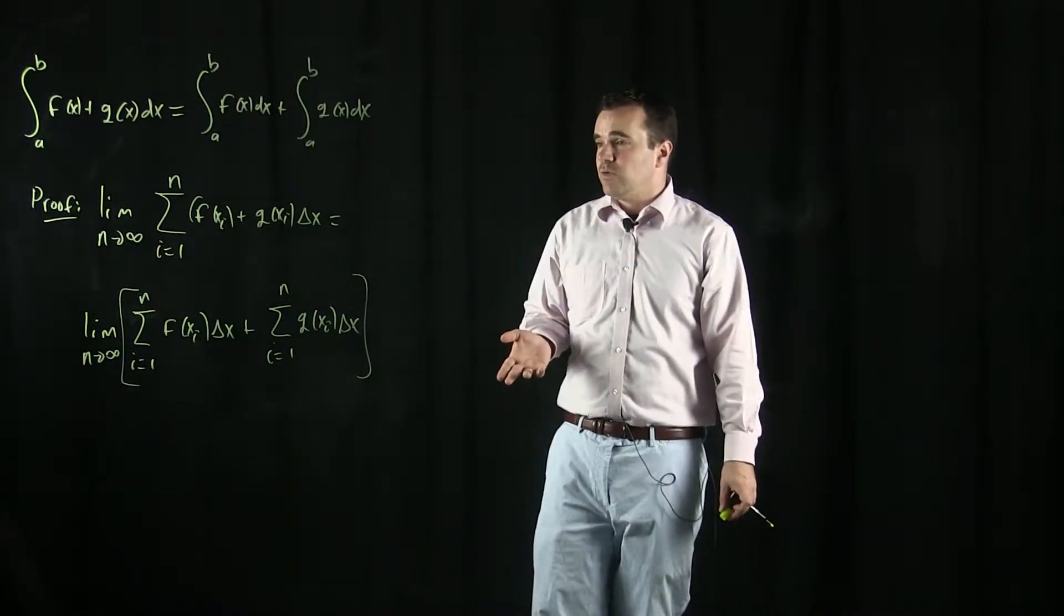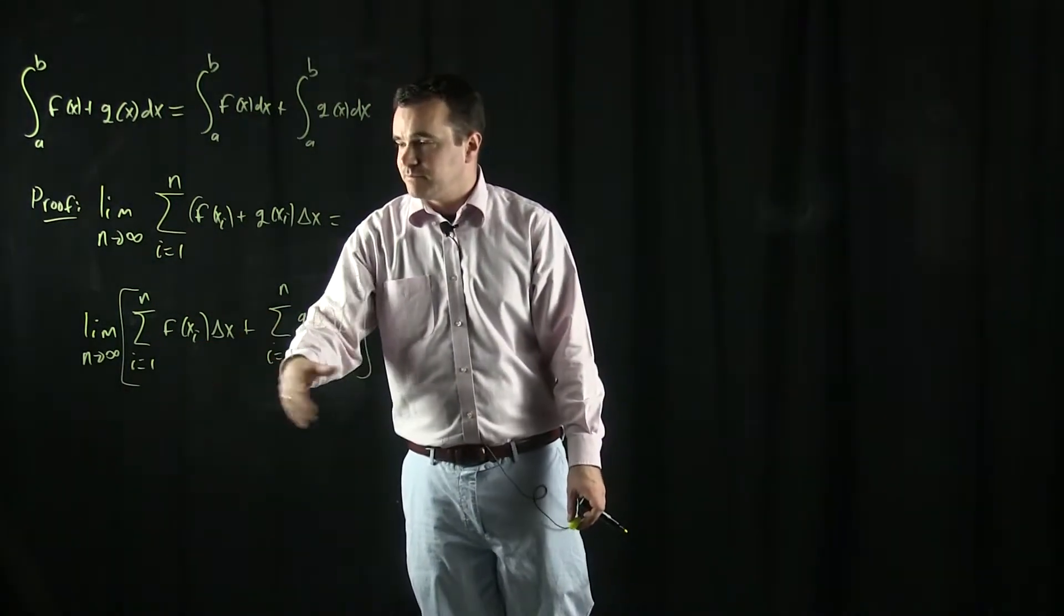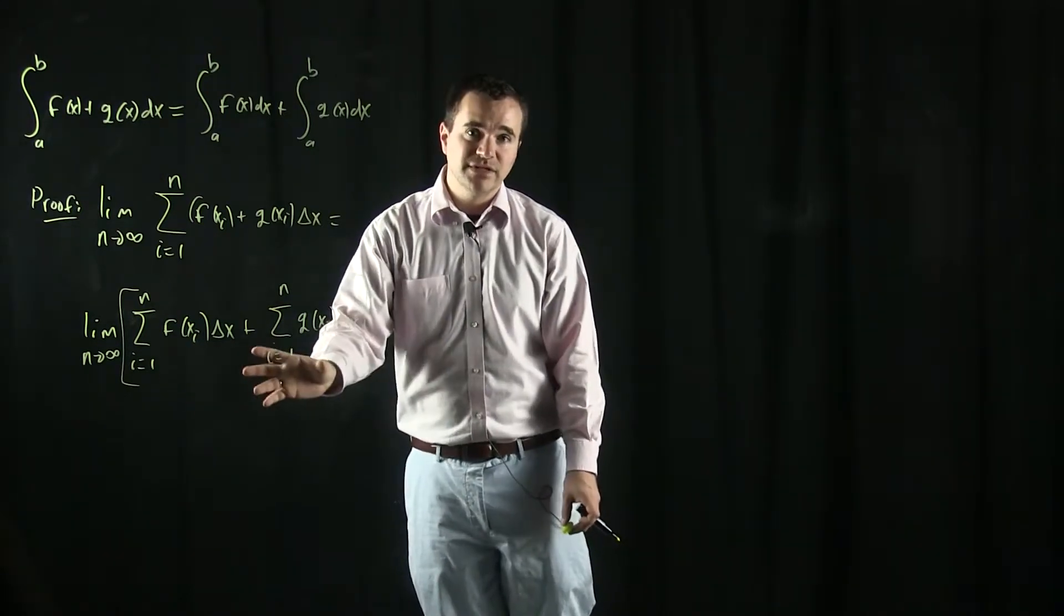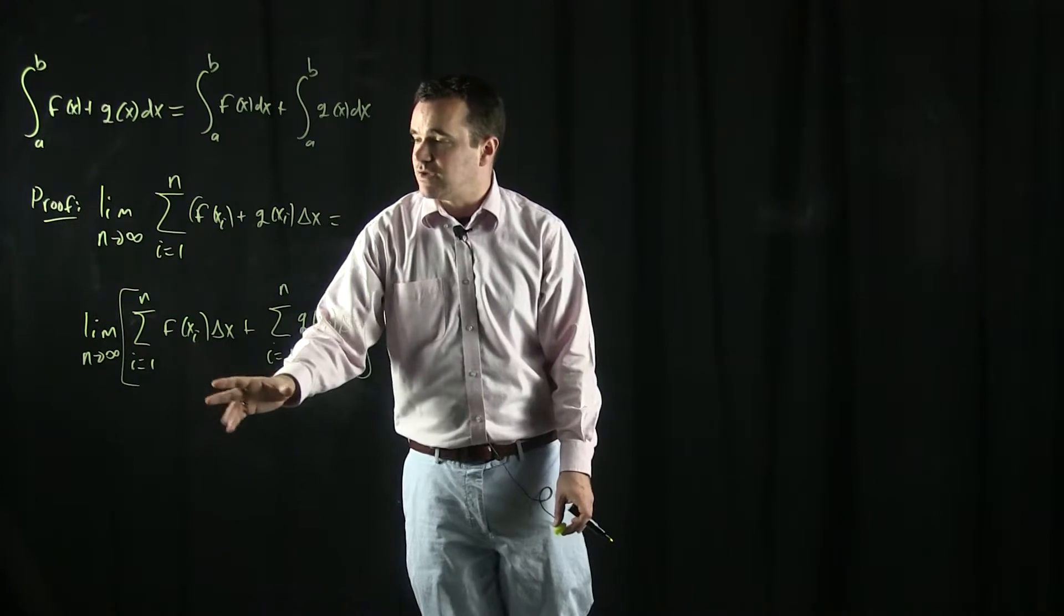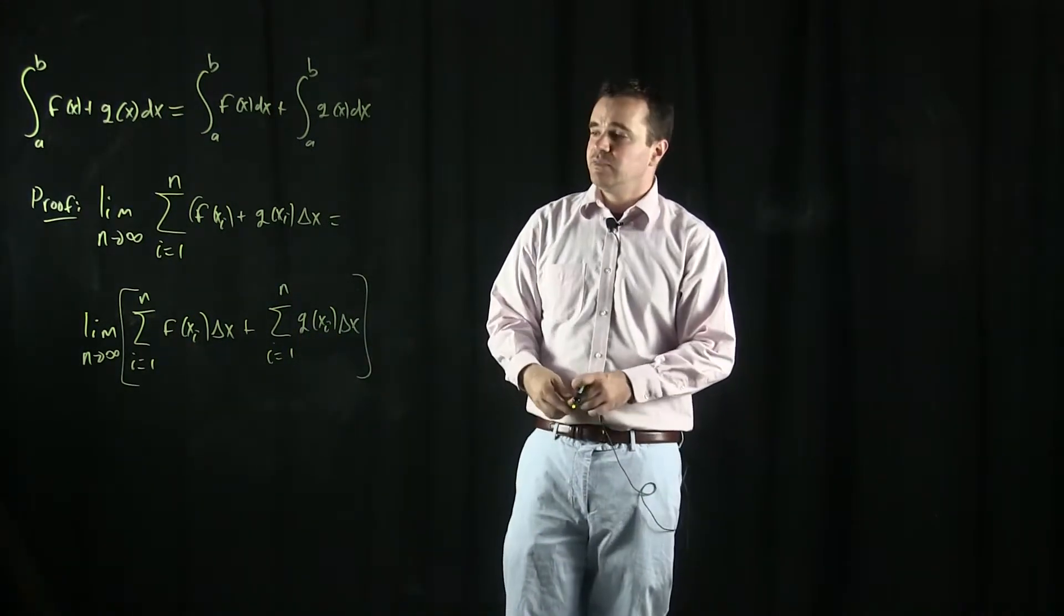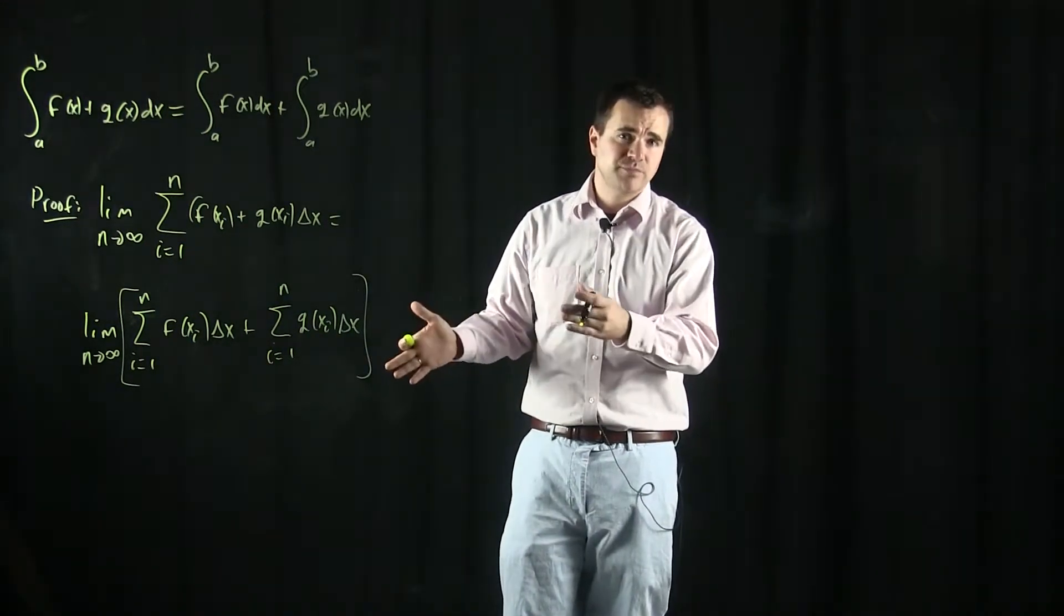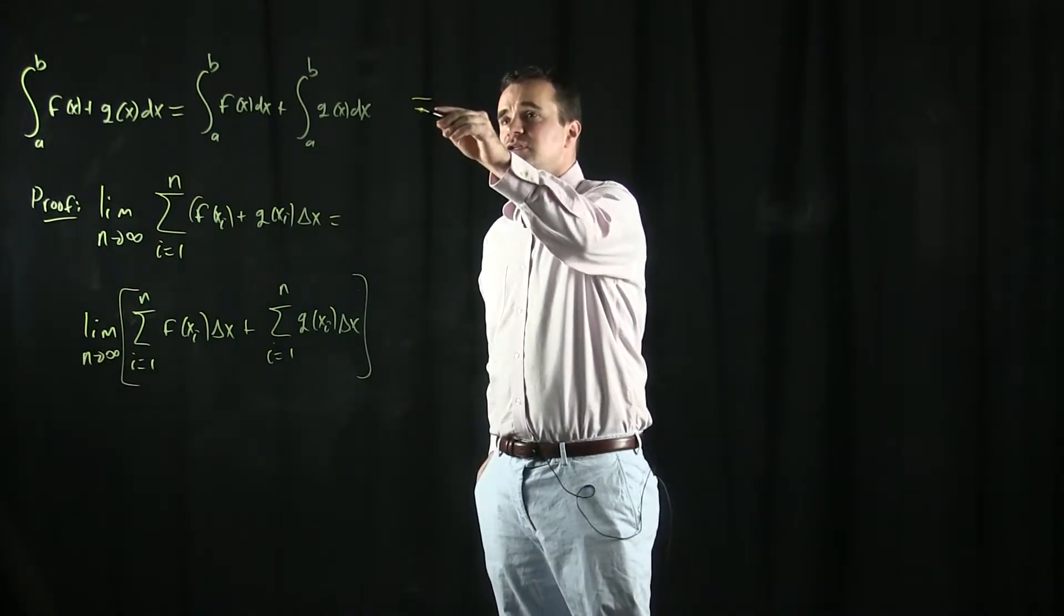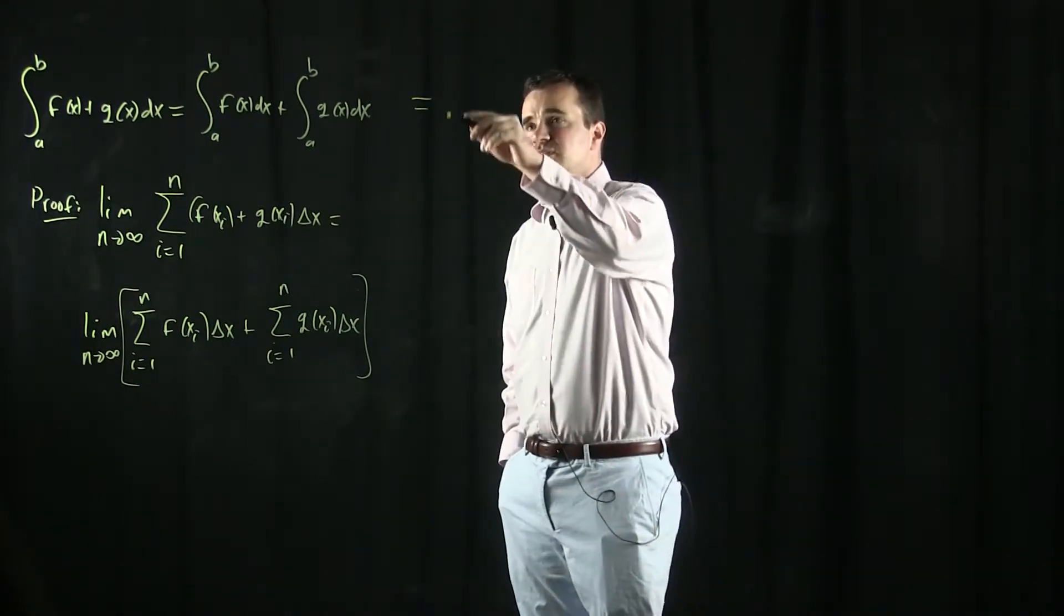And now I'm taking the limit of this sum, and the limit law says as long as both limits exist, the limit of the sum is the sum of the limits. That's what I meant when I said this whole thing just breaks down to really the statement of the limit laws. So if you continue on, then this is just the limit.